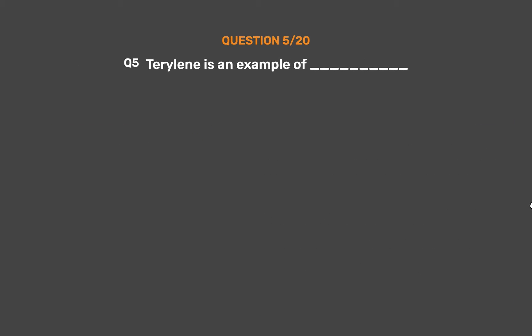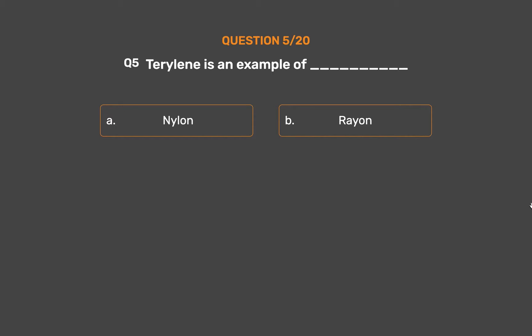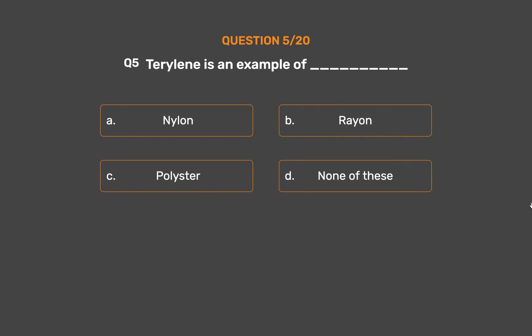Question Number 5. Terraline is an example of ___. Option A: Nylon. Option B: Rayon. Option C: Polyester. Option D: None of these.